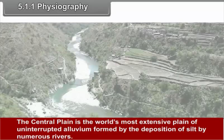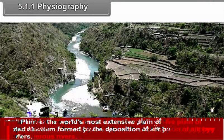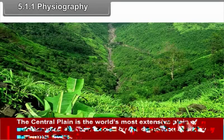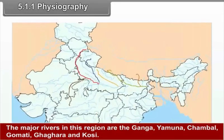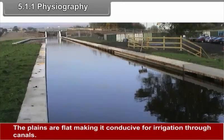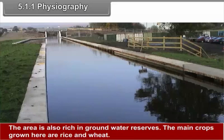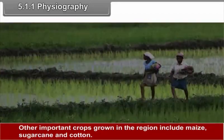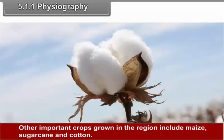5.1.1 Physiography. The central plain is the world's most extensive plain of uninterrupted alluvium formed by the deposition of silt by numerous rivers. The major rivers in this region are the Ganga, Yamuna, Chambal, Gomati, Ghagra and Kosi. The plains are flat, making it conducive for irrigation through canals. The area is also rich in groundwater reserves. The main crops grown here are rice and wheat. Other important crops grown in the region include maize, sugarcane and cotton.